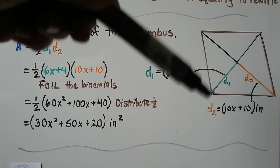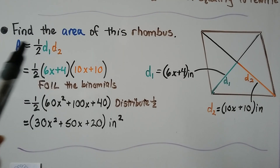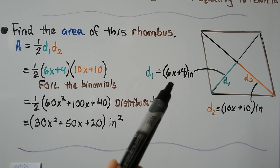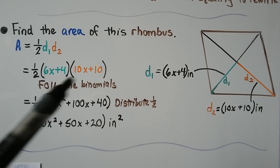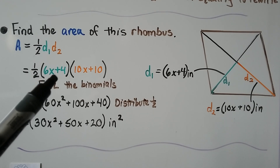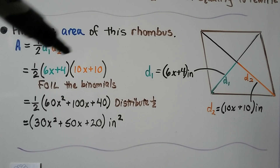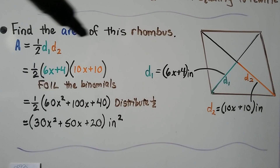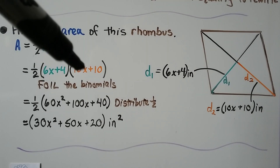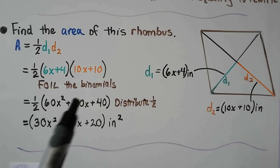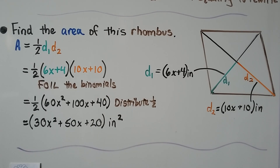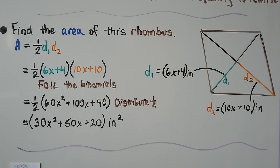Here we need to find the area of this rhombus using our area formula. The first diagonal is 6x + 4 inches and the second diagonal is 10x + 10 inches. We foil these binomials: half times (6x + 4) times (10x + 10). FOILing gives us 60x squared plus 60x plus 40x plus 40, which simplifies to 60x squared plus 100x plus 40. Distributing the half: 30x squared plus 50x plus 20 inches squared. Since we don't know the value of x, that is our area.